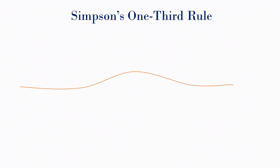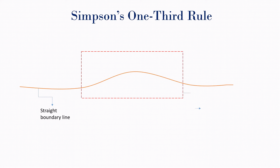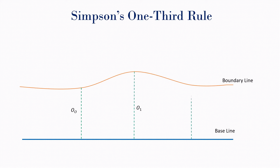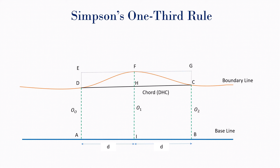Here, the curve portion of the boundary line is assumed to be a parabolic curve. To proceed with the calculations, we draw offsets from the baseline enclosing the curve portion of the boundary line. Let's look into the procedure of finding area by Simpson's one-third rule. We consider a curved boundary line which is part of a survey line whose curved parabolic portion DFC is under consideration. So we are supposed to calculate the area enclosed under this parabolic curve.